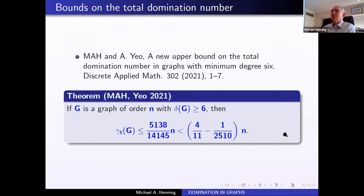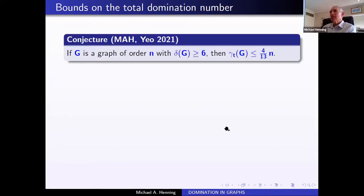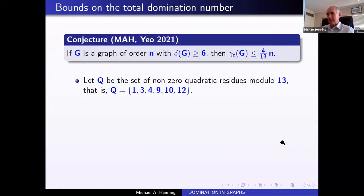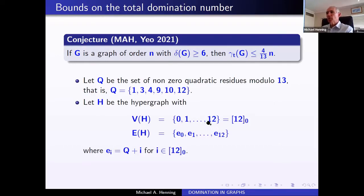We believe the bound for minimum degree six should actually be four-thirteenths, but we are quite far from proving it. The construction uses non-zero quadratic residues modulo 13 — the set {1,3,4,9,10,12} — to build a six-uniform, six-regular hypergraph on 13 vertices. Taking its incidence bipartite graph gives a six-regular graph of order 26 needing exactly eight vertices to totally dominate, which is four-thirteenths. So if our conjecture is correct, it would be tight.